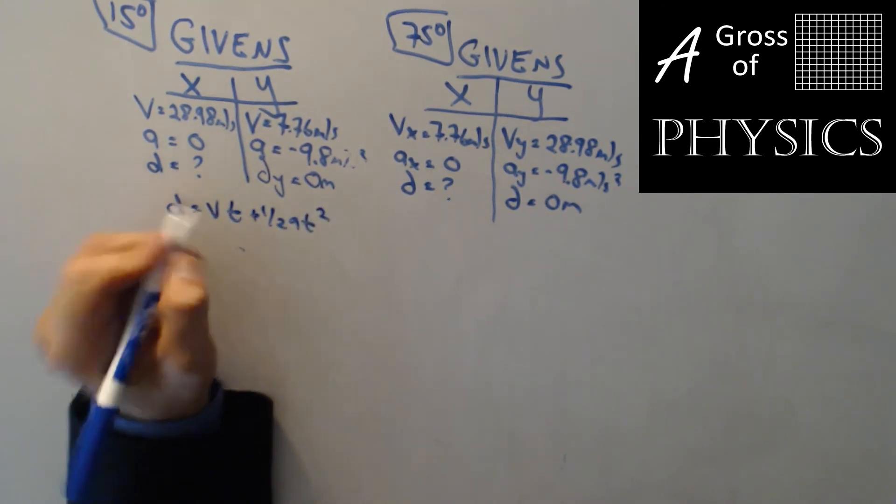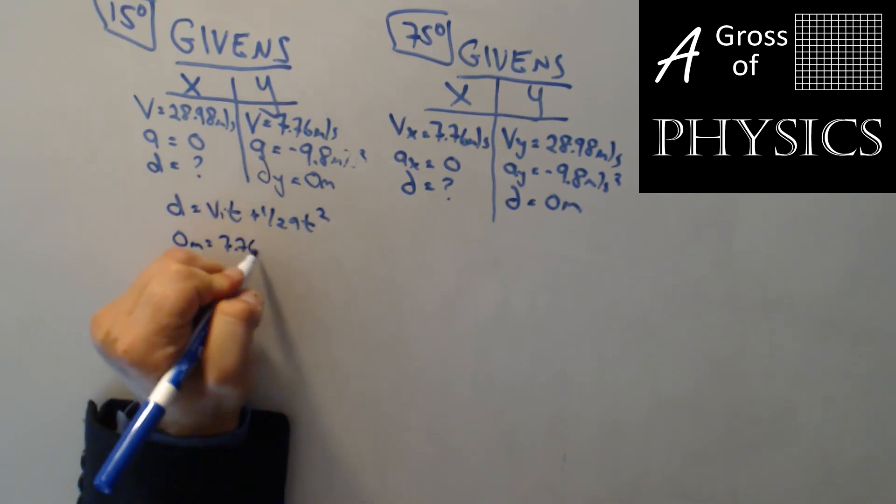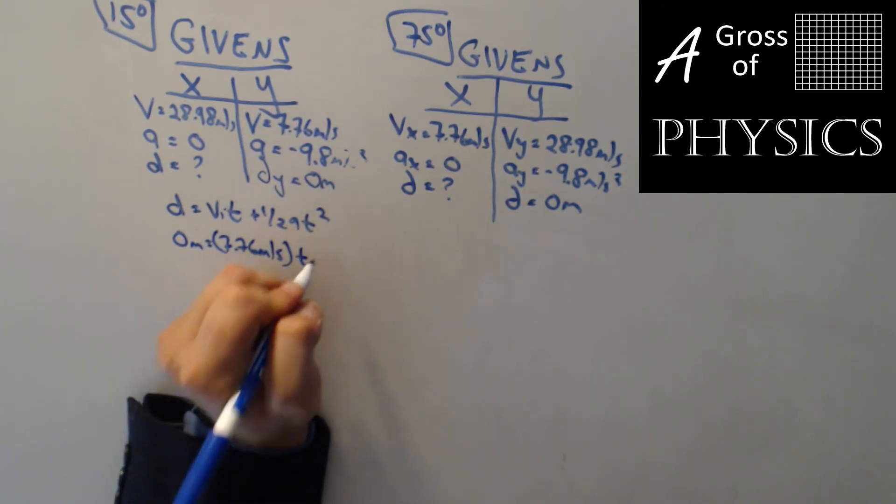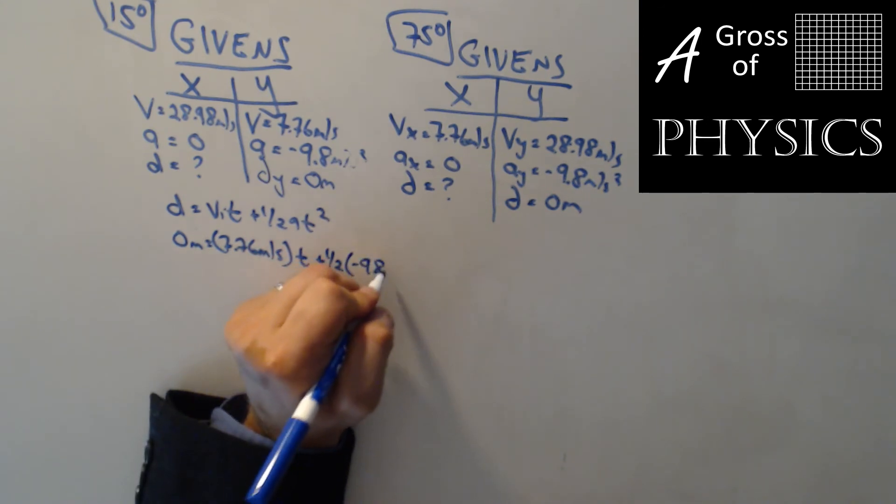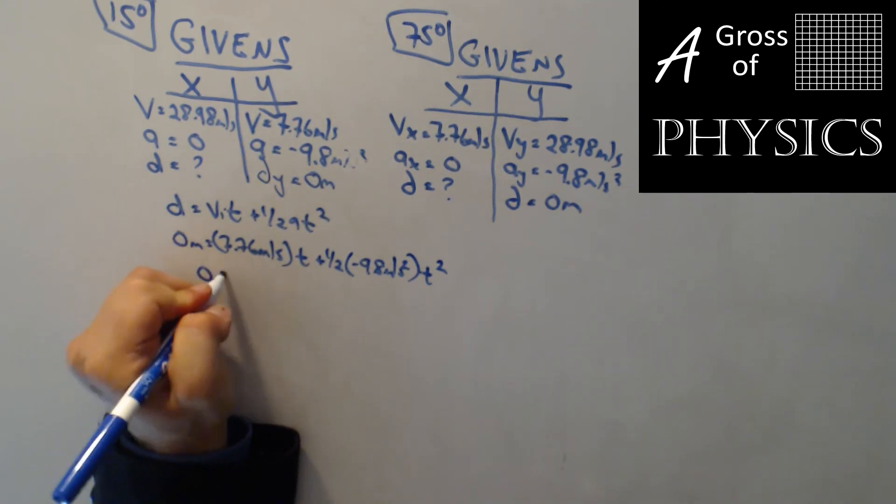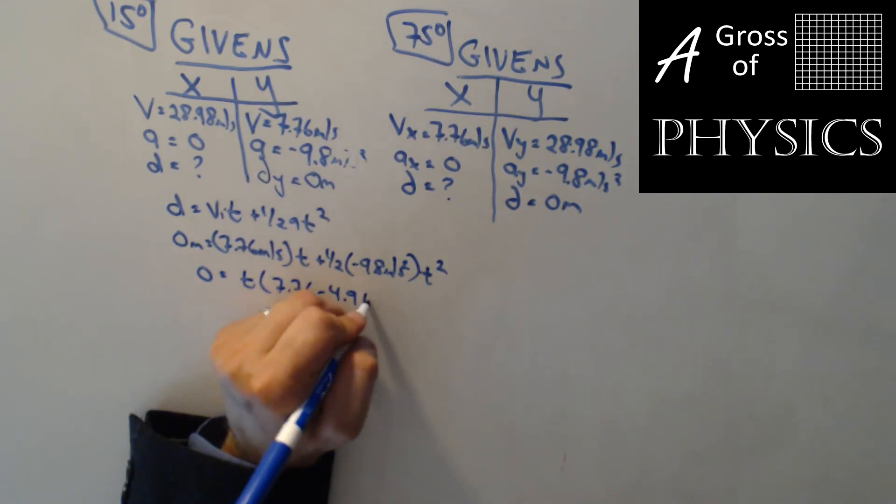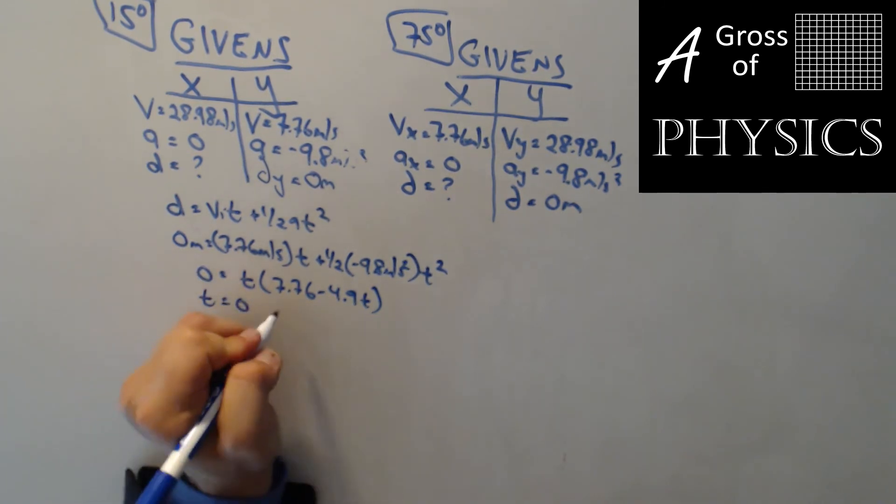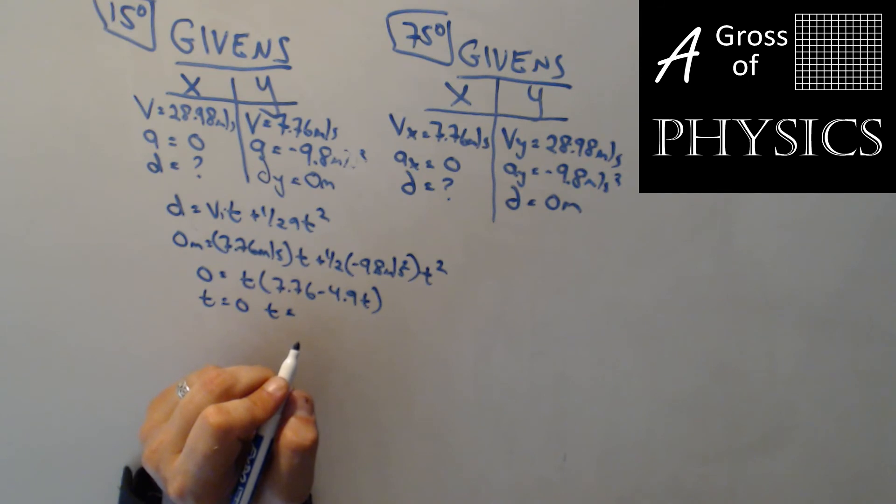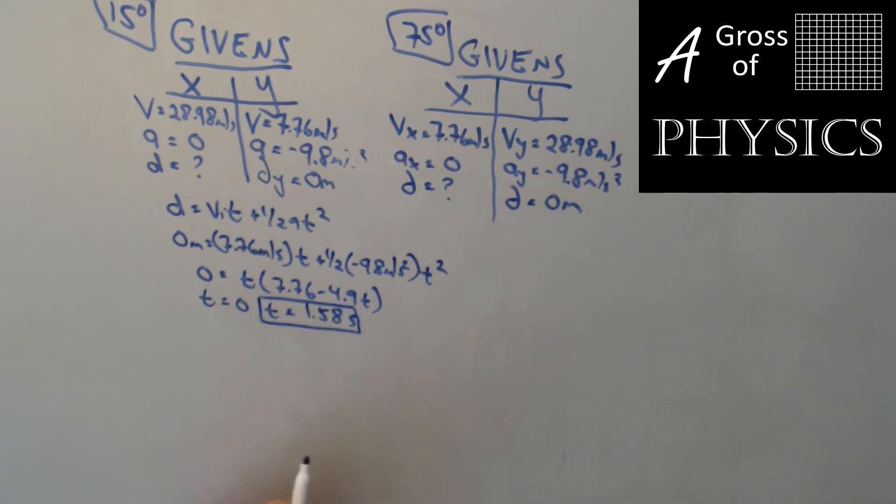So I'll do T equals V, I, T, plus one-half A, T squared. Zero meters equals 7.76 meters per second times T, plus one-half negative 9.8 meters per second squared T squared. This will be a factor problem, so 0 equals T, and 7.76 minus 4.9 T. T equals 0, and T equals, we'll bring over the 7.76, divided by 4.9. So that's in the air for 1.58 seconds. That's our time for the 15 degrees.